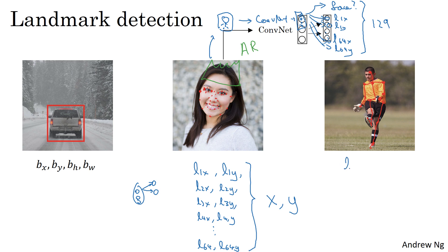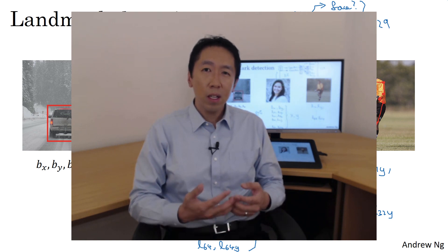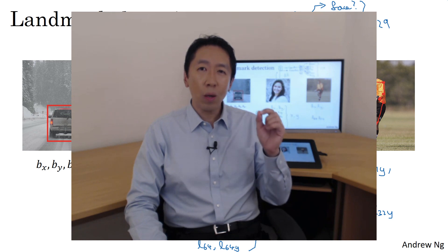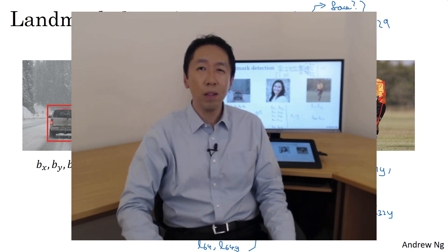And of course, to do that, you also need to specify these key landmarks, like maybe L1X and L1Y is the midpoint of the chest down to maybe L32X, L32Y if you use 32 coordinates to specify the pose of the person. So this idea might seem quite simple of just adding a bunch of output units to output the XY coordinates of different landmarks you want to recognize. To be clear, the identity of landmark one must be consistent across different images. Like maybe landmark one is always this corner of the eye, landmark two is always this corner of the eye, landmark three, landmark four, and so on. So the labels have to be consistent across different images.